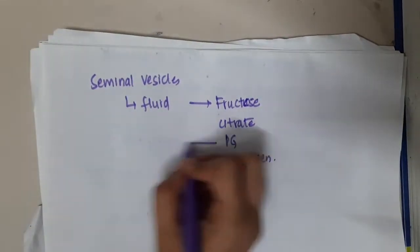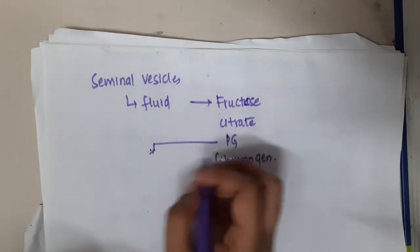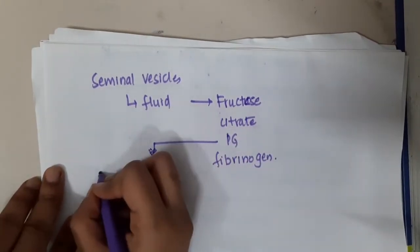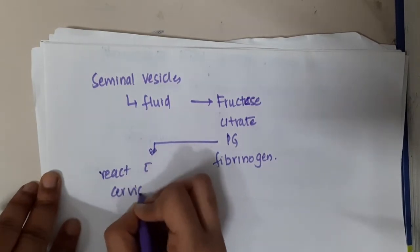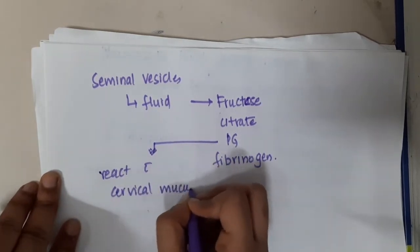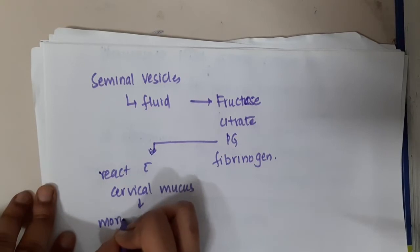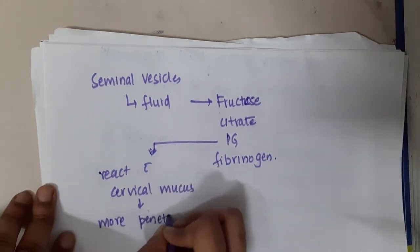Why is prostaglandin present? This prostaglandin reacts with cervical mucus and makes it more penetrable by sperm.